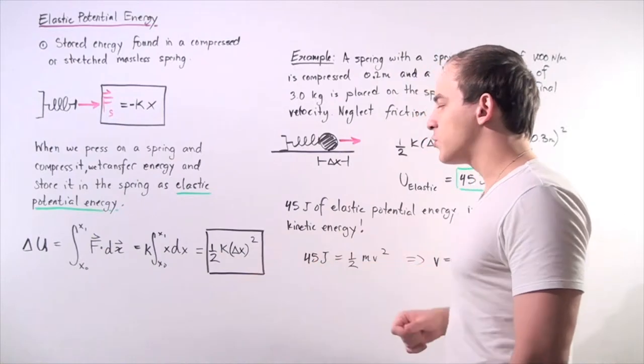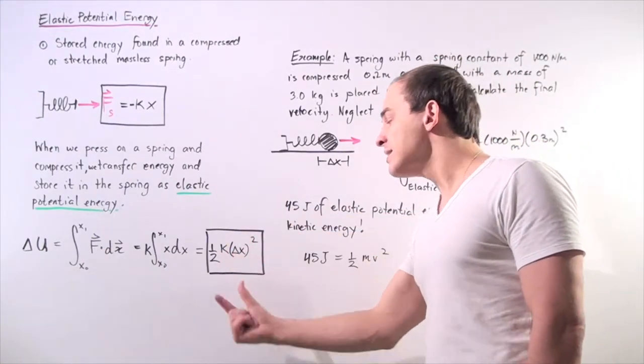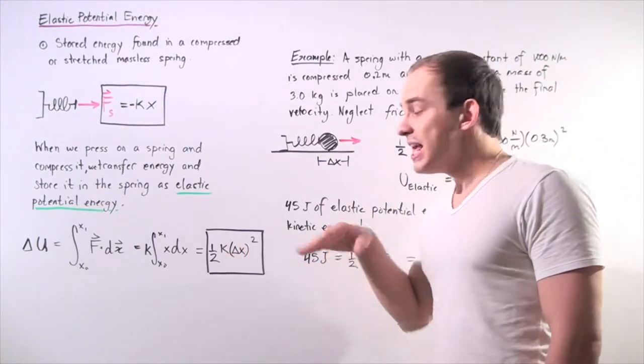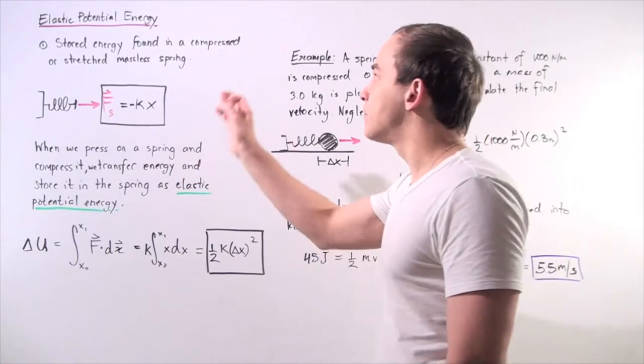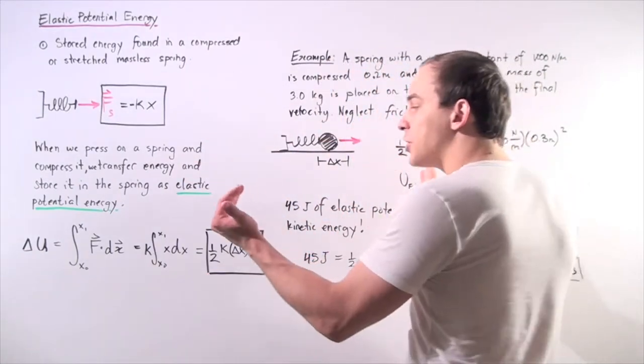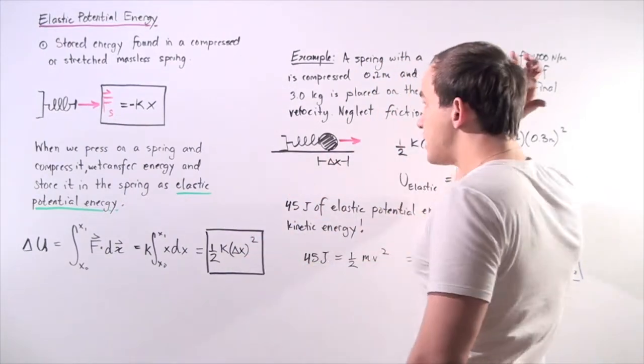We get the following result: one half times the spring constant multiplied by the square of our displacement. This gives how much elastic potential energy is stored in our spring when we either compress it or stretch it a certain distance, change in x.